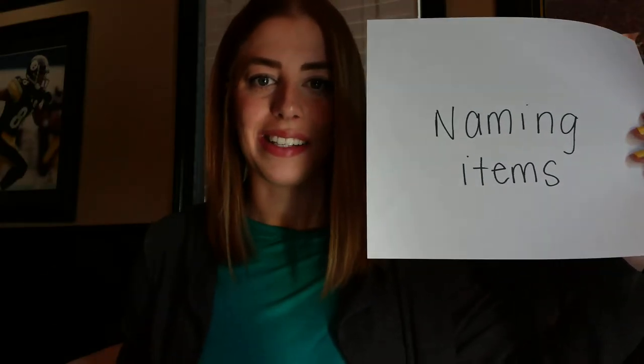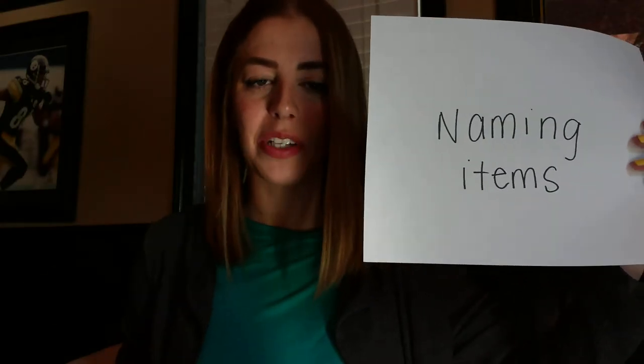The next section is naming the items. First we did object identification, so now we're going to name them. What you're going to do is hold up the item for the child and say, 'What is this?' — and they should say 'toilet paper.' You're going to do that for each item: 'What is this?' — 'A towel.' You're going to keep going with all the items just like that.